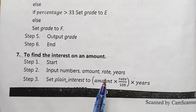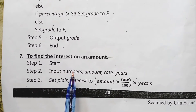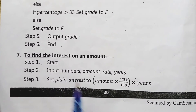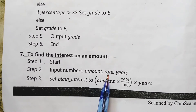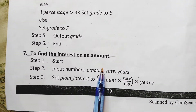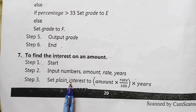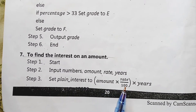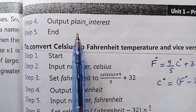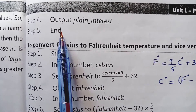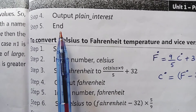Example number 7 is to find interest on an amount. We have already discussed this problem and its flow chart. Step number 1 is the start. Step number 2, data values — amount, rate, and years — are entered. Step number 3 calculates plain interest as: amount multiplied by rate divided by 100, multiplied by years. Step number 4 outputs the plain interest. Step number 5 is the end.